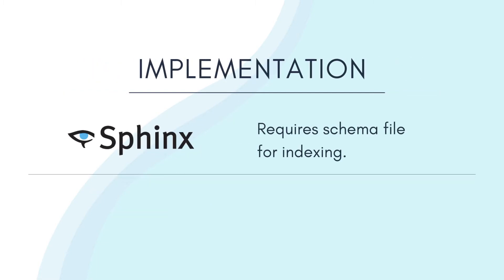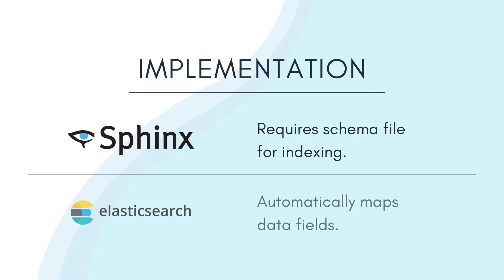As far as implementation is concerned, both Sphinx and Elasticsearch work best when teams have some working knowledge and experience with the search technology. While Sphinx requires a managed schema file to define index structures, fields and data types, Elasticsearch manages this automatically. Although not totally accurate, you can create manual mappings to ensure search relevance.